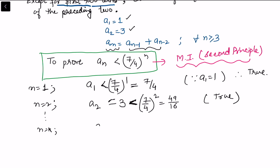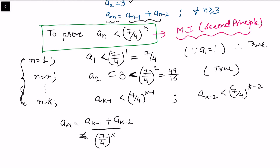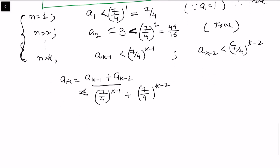For n equals k, we assume the result is true for k minus one — that is, aₖ₋₁ is strictly less than (7/4) to the power k minus one — and also true for k minus two — that is, aₖ₋₂ is strictly less than (7/4) to the power k minus two. To prove it for the k-th term, since aₖ equals aₖ₋₁ plus aₖ₋₂, we get aₖ is strictly less than (7/4)^(k−1) plus (7/4)^(k−2).